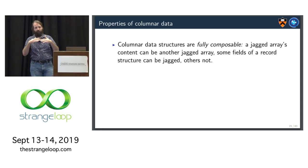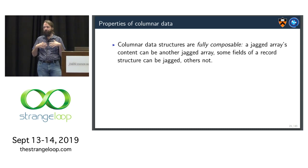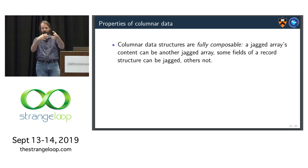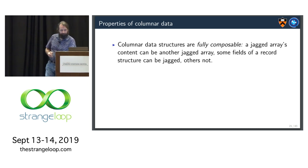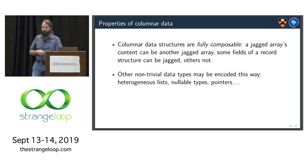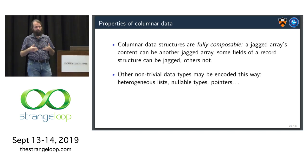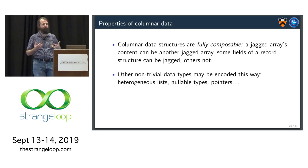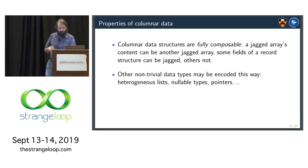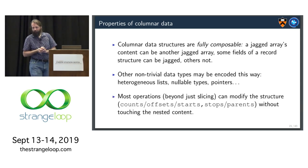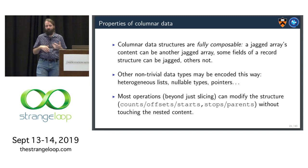So properties of columnar data, I didn't prove it, but they are fully composable. So you could, for instance, say a jagged array's content is not just flat numbers, it's another jagged array. And you can keep doing that all the way down. And you can do that in arbitrary, complex ways. In addition, you can do more than just jaggedness. Other non-trivial data types like heterogeneous, so you might be thinking like a tagged union, nullable types, pointers. The one thing it has to be is it has to be statically typable. It can't be completely dynamic data. You have to know ahead of time what is the type. And most operations, beyond just the slicing example I showed, can modify the structure, the structure arrays, so the counts of the offsets of the starts, stops of the parents, the things I showed you in red, without touching the underlying content.